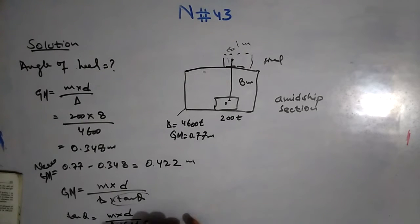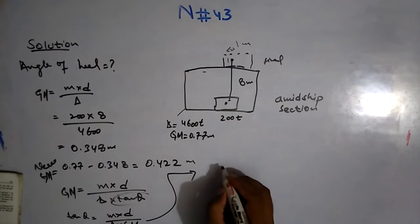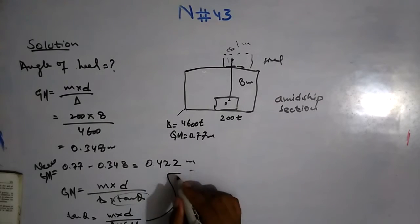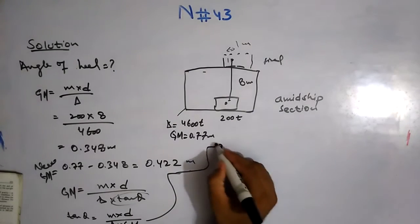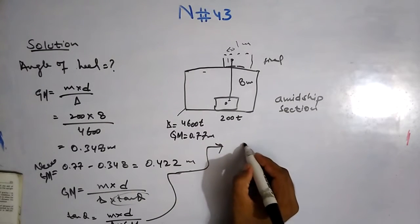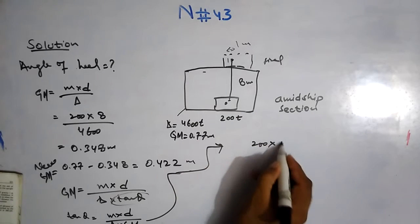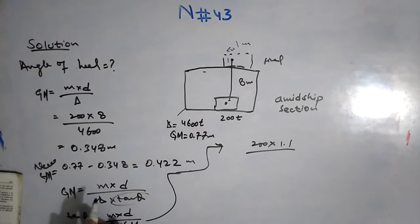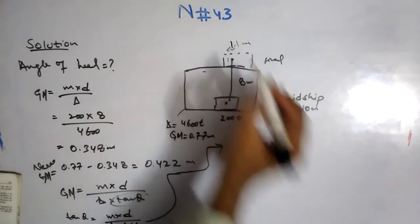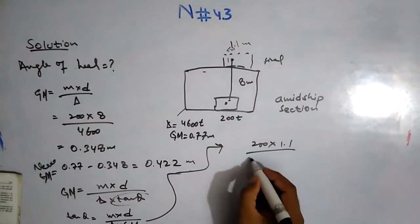Solving here: M is 200 again, moving is 1.1, it's not 1 it's 1.1, and the Δ is 4,600 and the new GM is 0.422.